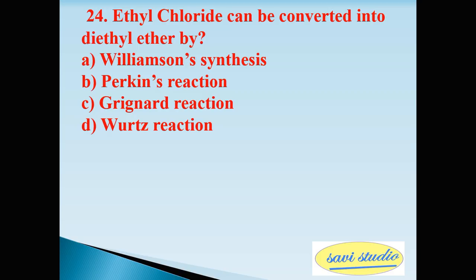Twenty-fourth question: ethyl chloride can be converted into diethyl ether by A: Williamson's synthesis, B: Perkin reaction, C: Grignard reaction, D: Wurtz reaction. The answer is A: Williamson's synthesis.